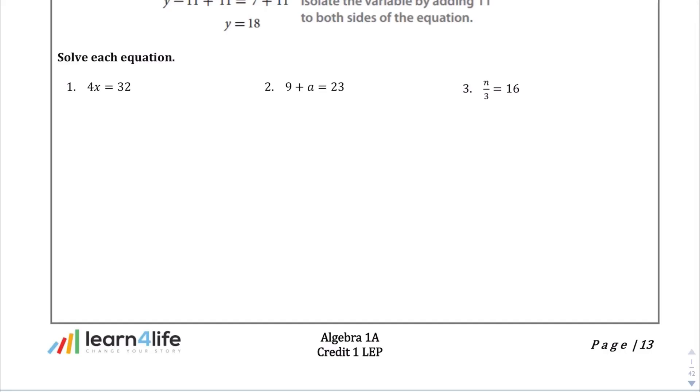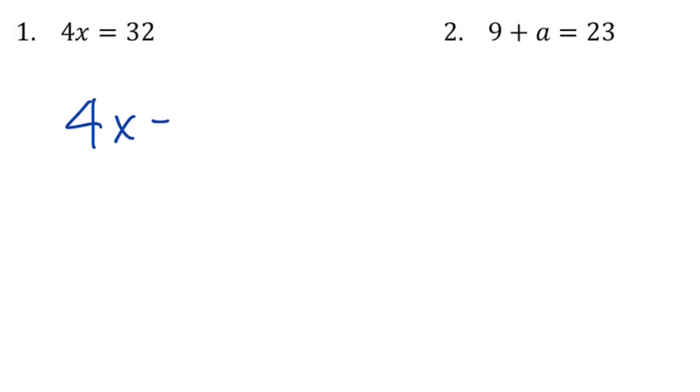We're going to assume that we already understand how to solve equations. Let's take a look at this example: 4x equals 32. The relationship between the 4 and the x is one of multiplication, so we're going to do the inverse by dividing. We're going to divide both sides by 4 and we end up with x equals 8.